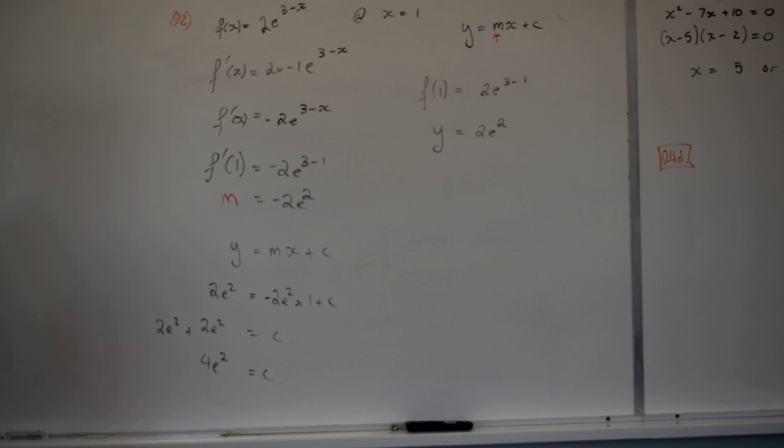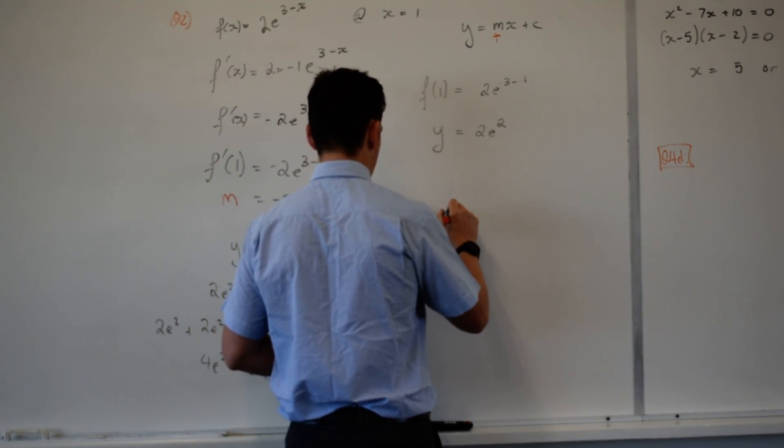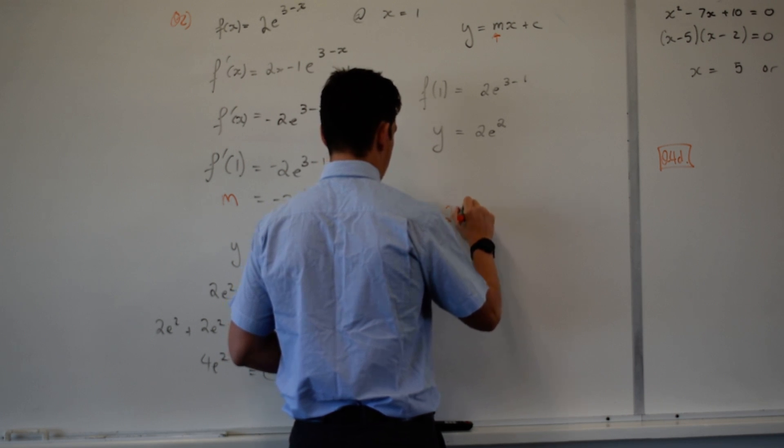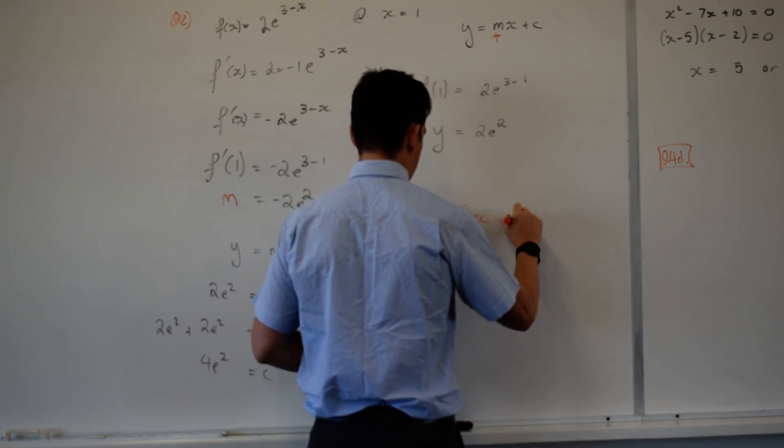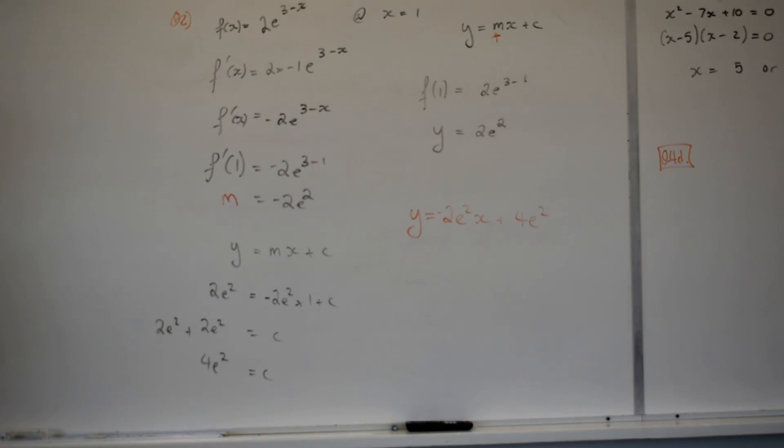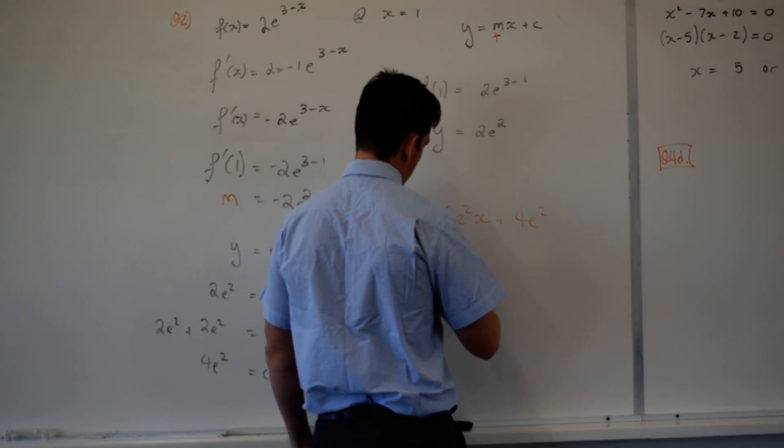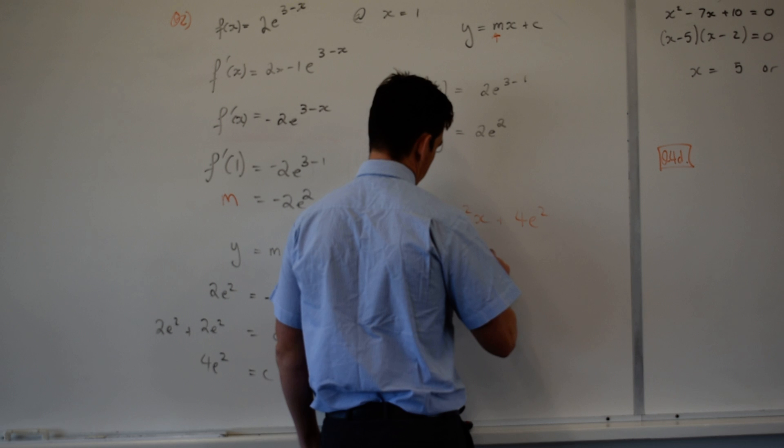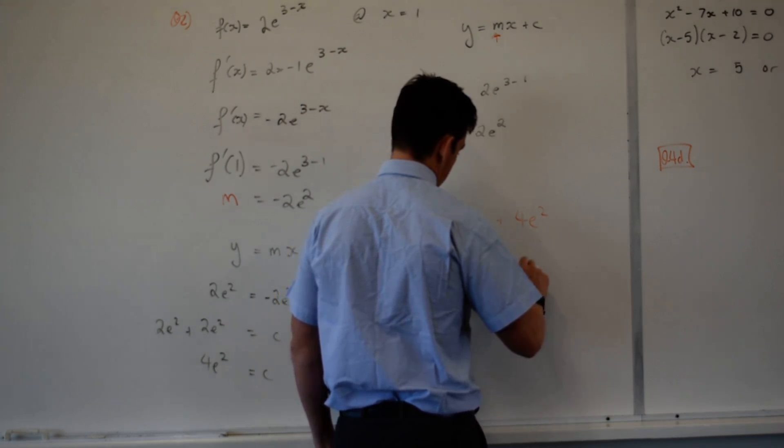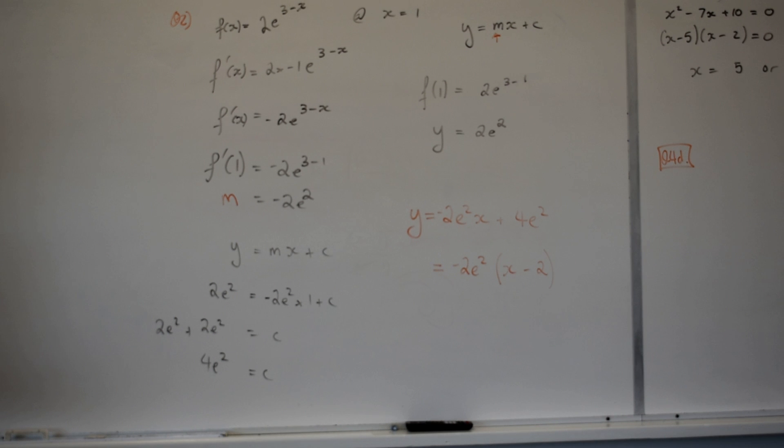And I simply shove that back into my function. So I'm going to do an orange. y equals negative 2e to the 2 x plus 4e to the 2. If I wanted to factorise that, I could. A lot of exponential functions we can factorise. So I might take negative 2e to the 2 times x minus 2. That could be how that looks.